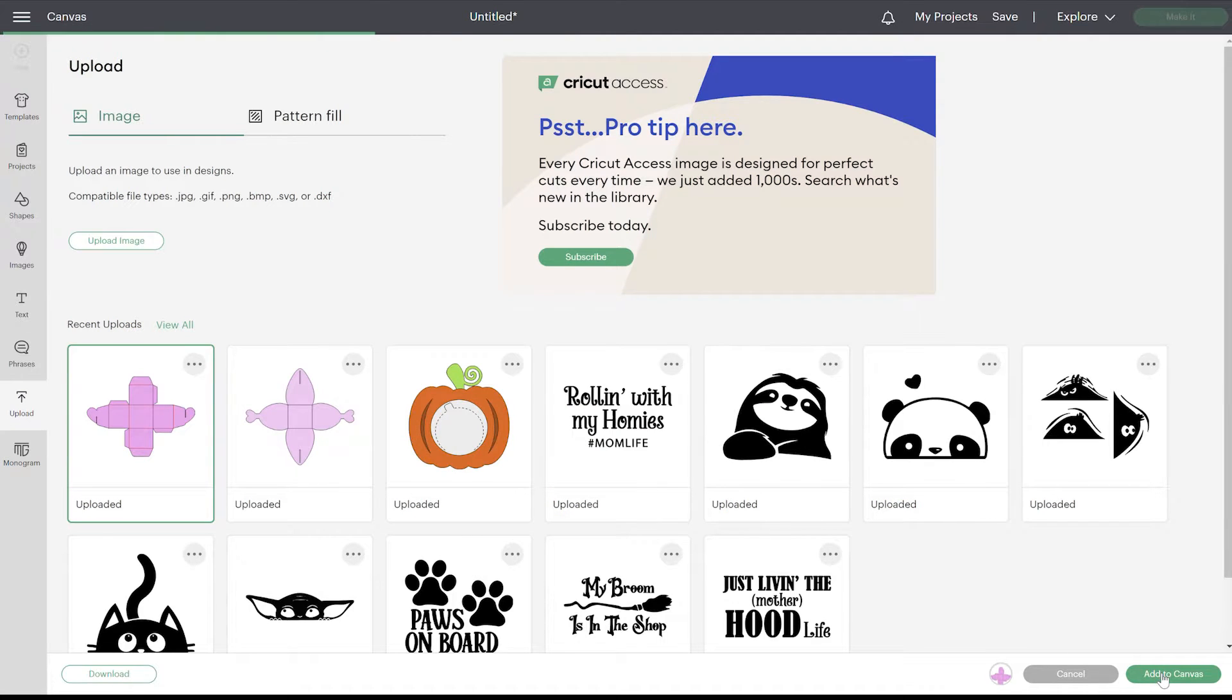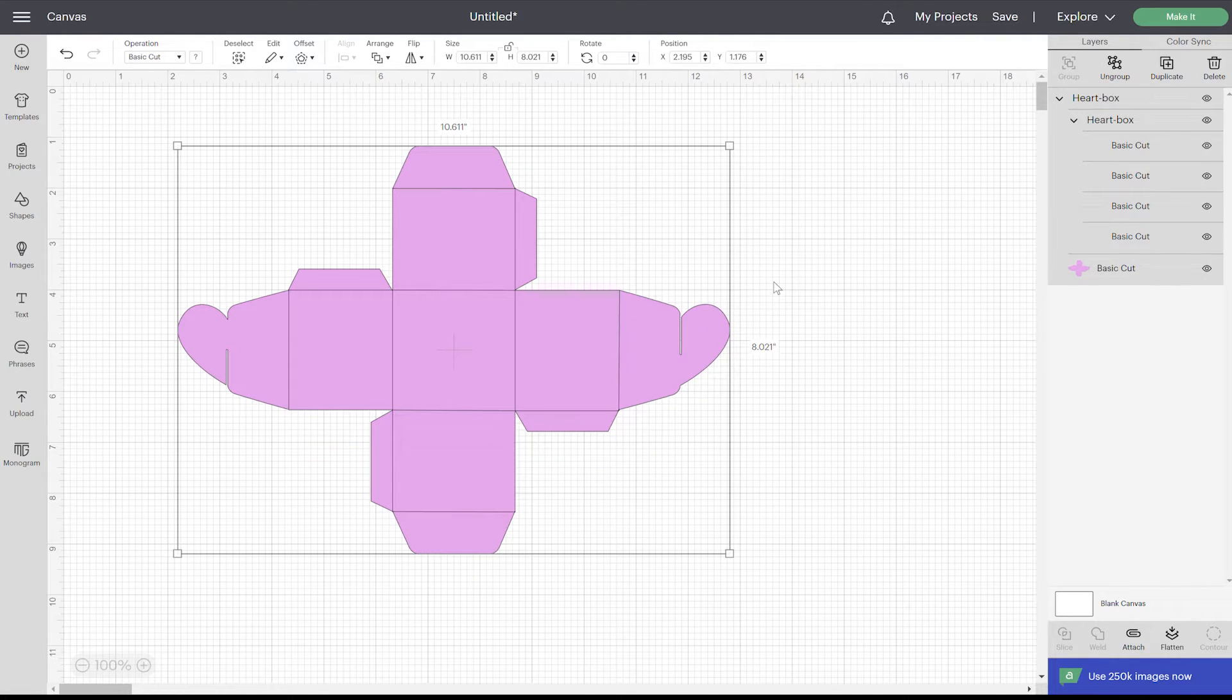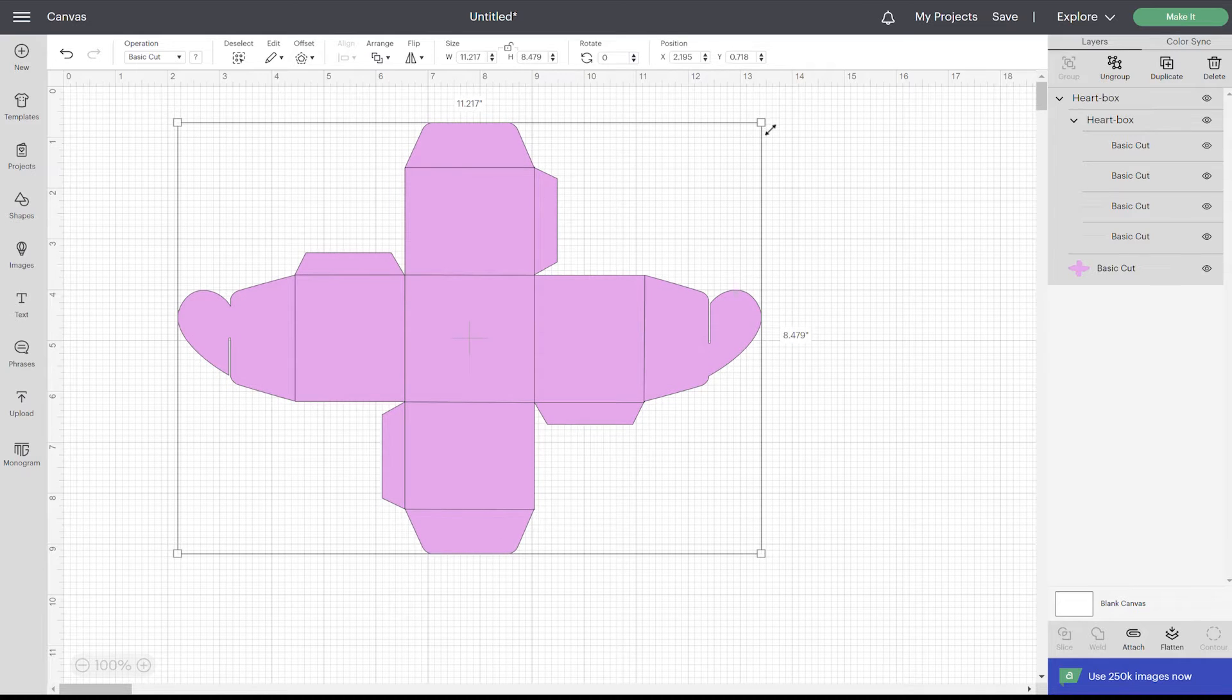Once you upload them, go ahead and add it to your canvas. As far as the size, you can go a little bit bigger with this. Keep in mind most cardstock is 12 by 12 so you can drag if you want to go bigger or smaller. You can't go too much bigger. You do need to keep it under 12 by 12. I think the cutting size is around 11 and a half. There's a specific dimension but I don't have that on me right now.